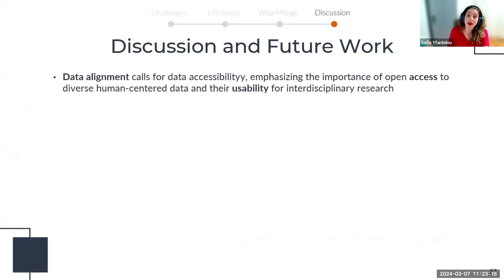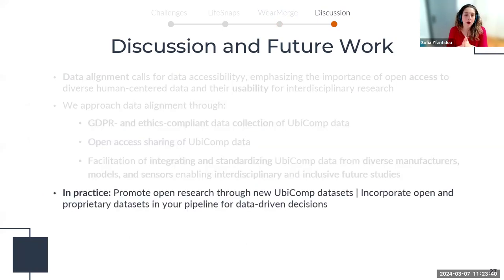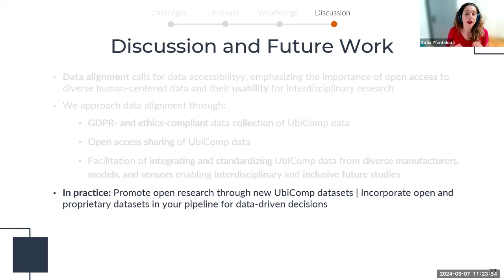Summing up, data alignment calls for data accessibility — which requires both data access and data usability for people with diverse levels of technical literacy. We approach data alignment through GDPR and ethics-compliant data collection, open-access sharing of ubicomp data, and facilitation of integrating and standardizing data from diverse manufacturers. If you work with a research institution, promote open research by publishing new ubicomp datasets for diverse user cohorts. If you're a business, take advantage of proprietary and open datasets like LiveSnaps to encourage data-driven decisions and incorporate intelligence into your business pipeline.